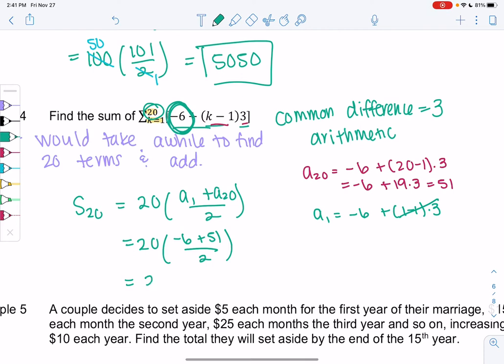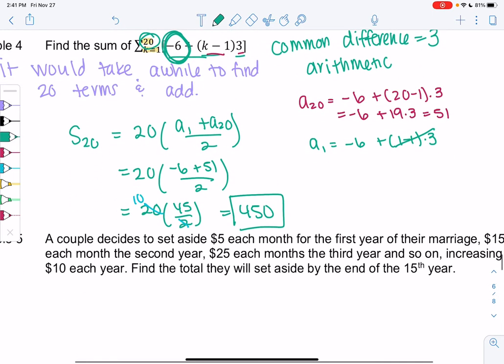So we get 20 times 45 over 2. So 20 and 2 cancel and make 10. So the sum would be 450. Cool. Let's try one more. Example 5.